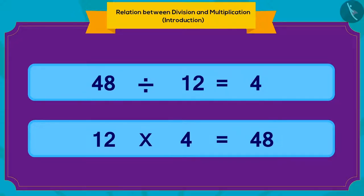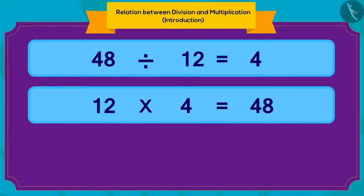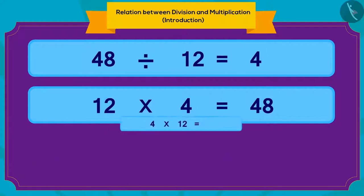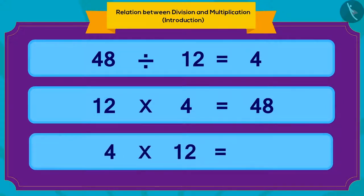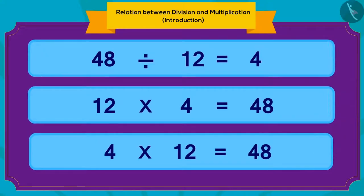12 multiplied by 4 is 48. We can write this multiplication in one more way: if every person gets 4 kg of kheer and there are 12 people, then the total quantity is 4 multiplied by 12, which is 48 kg. We can write any division in two ways in terms of multiplication.